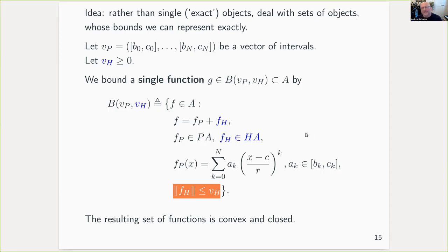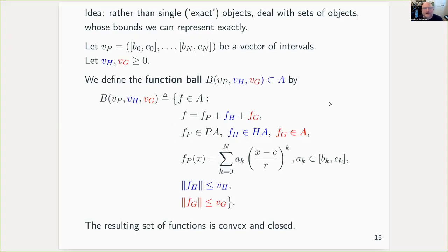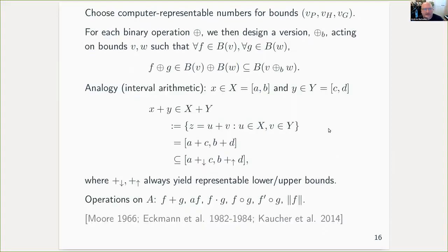So in this way, we can bound any single function in our space. And finally, it's convenient to deal with balls of many functions in our space. So to do that, we simply add on another bound VG, and you can think of this as the radius of a ball in the usual sense. So VG just bounds the norm of a general function in our space that we add on. And the resulting set of functions, we call it a function ball, and it's convex and closed. Convexity turns out to be very important for what we do later.